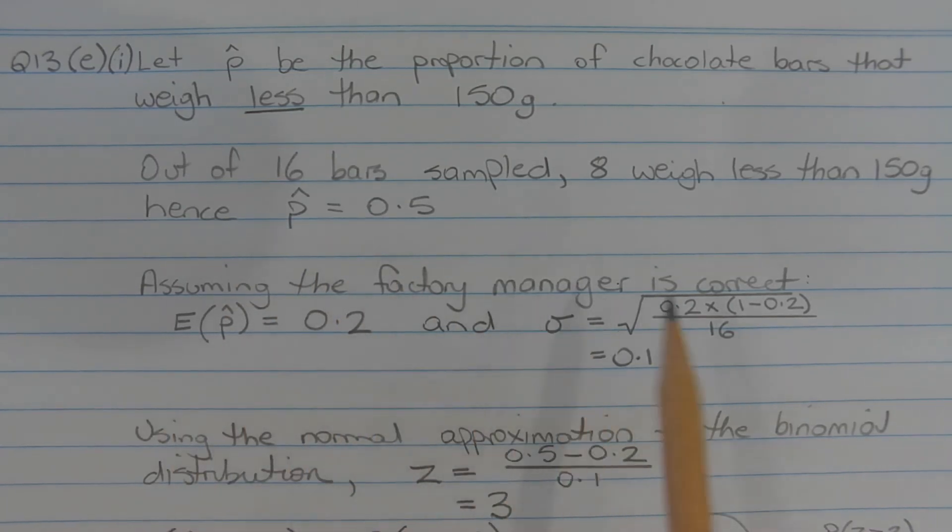Assuming the factory manager is correct, the expected value of P hat is equal to 0.2 and the standard deviation of P hat is equal to the square root of 0.2 times 1 minus 0.2 over 16, which equals 0.1.